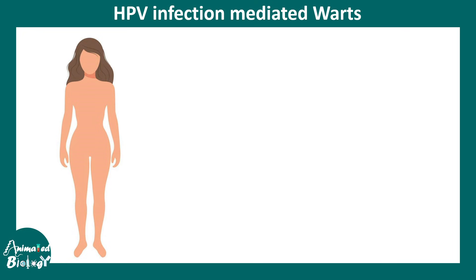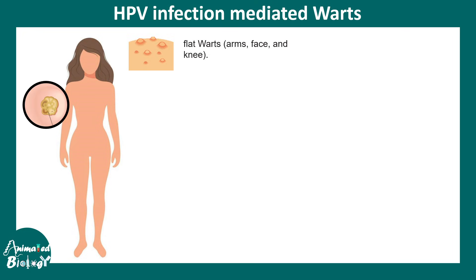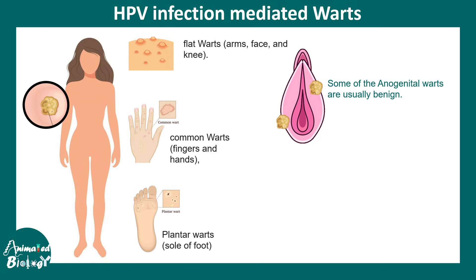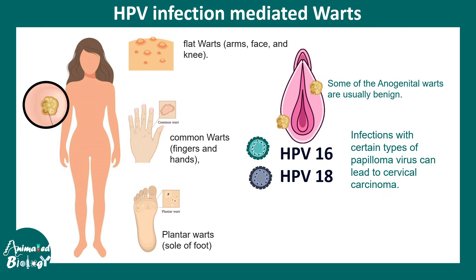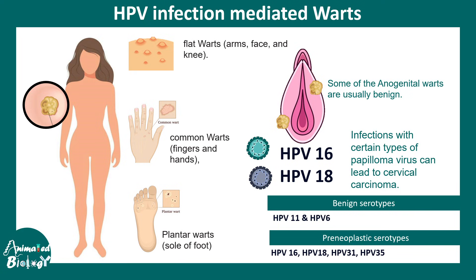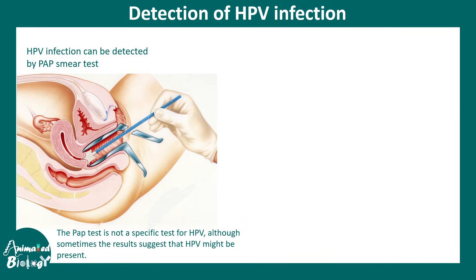HPV infection can generate warts in different locations: flat warts on arms, face, and knees; common warts on fingers and hands; and plantar warts on the soles of the feet, which can be quite painful. Anogenital warts in the anus or genital region are mostly benign, but certain serotypes — particularly HPV 16 and 18 — can lead to cervical carcinoma. Benign serotypes include HPV 6 and 11, while pre-neoplastic serotypes include HPV 16, 18, 31, and 35.